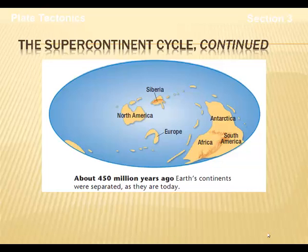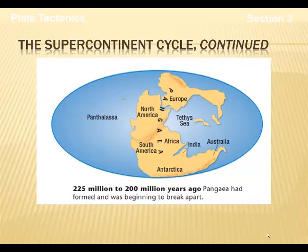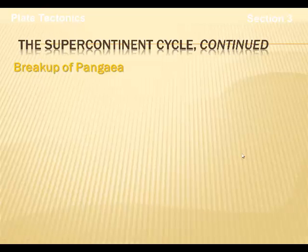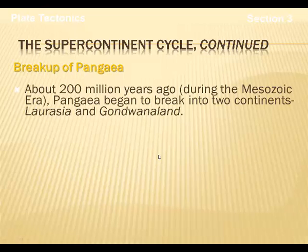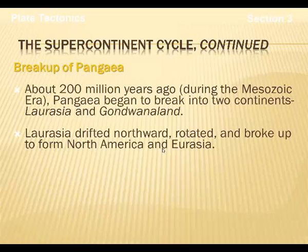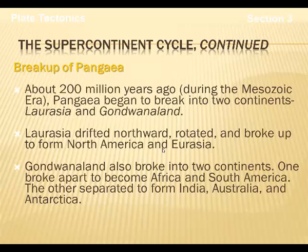This is what scientists thought the Earth may have looked like 450 million years ago. Slowly, Pangaea developed — we can see the Tethys Sea right here, and the global ocean covered the rest of the planet. Scientists think that as heat energy built up inside the planet, it eventually had to break apart. Around 200 million years ago, the supercontinent of Pangaea started to break apart into two different continents: Laurasia and Gondwanaland. Laurasia drifted northward and broke up into North America and Eurasia, while Gondwanaland broke into two continents — part became Africa and the other part became South America. Smaller sections became India, Australia, and Antarctica.